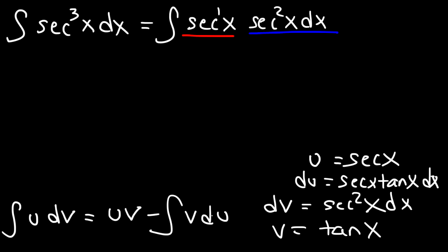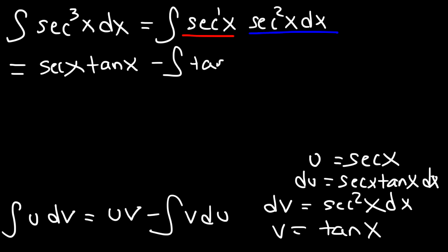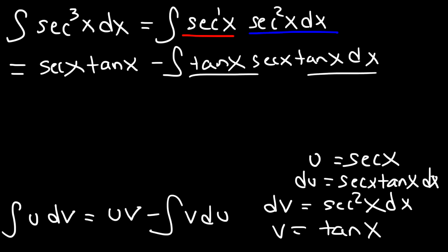Using this formula, it's going to be u times v — so that's secant x and v is tangent x — minus the integral of v du. So v is tangent and du is secant tangent dx. We have tangent times tangent, which I'm going to rewrite as tangent squared.